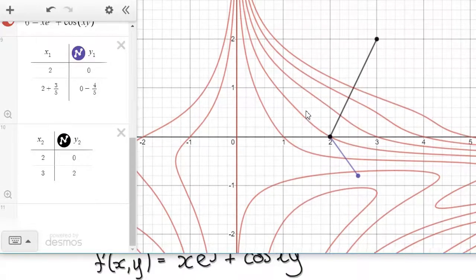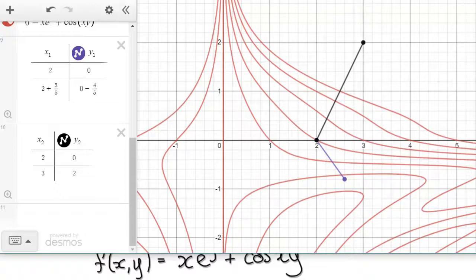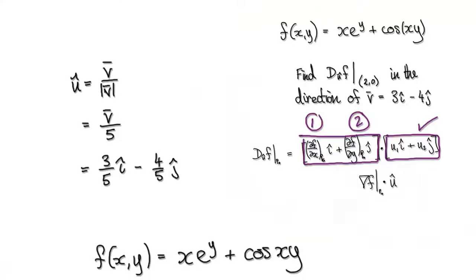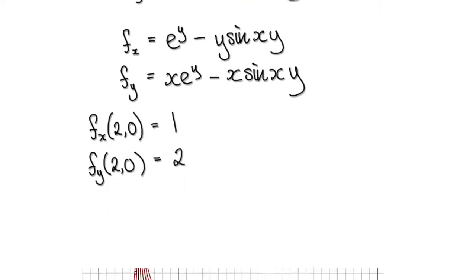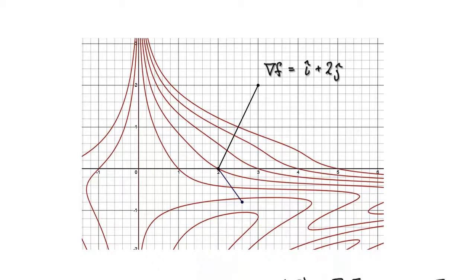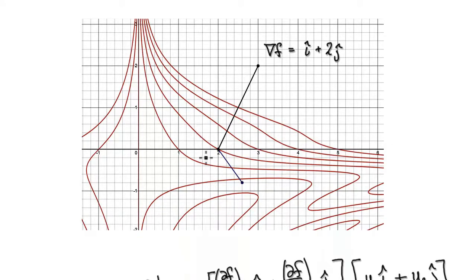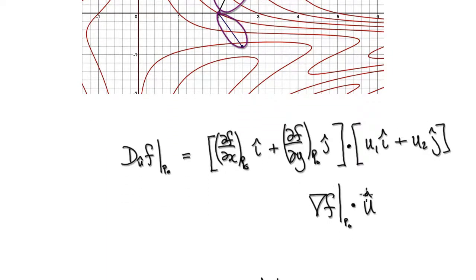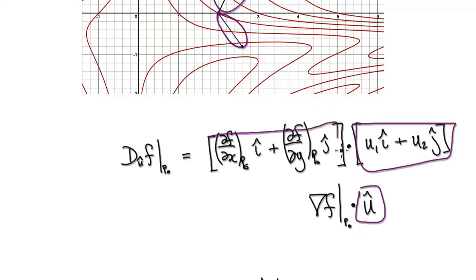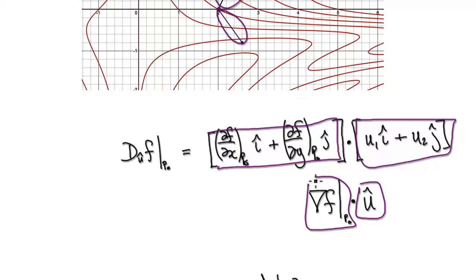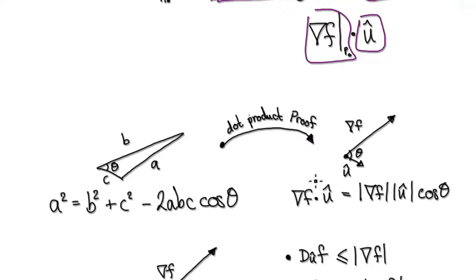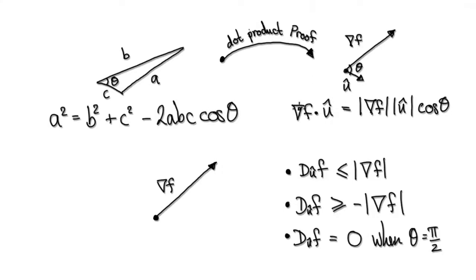Our diagram now looks like this. This is our unit vector and this is our gradient vector. Remember, in the previous video the relationship between the directional derivative, the gradient, and the unit vector was this formula here.